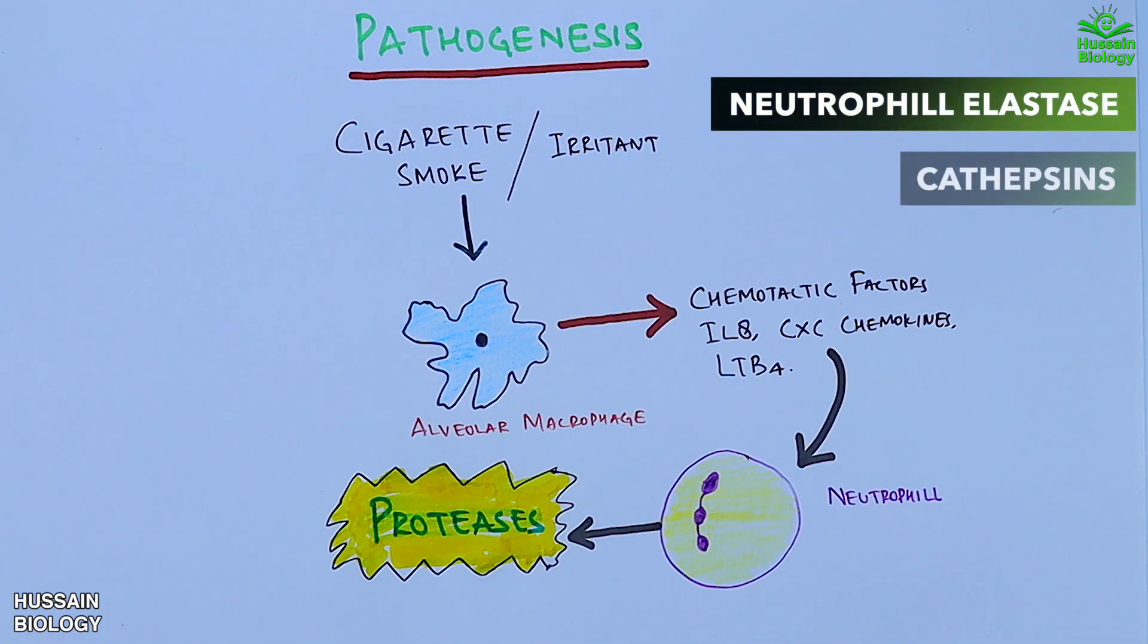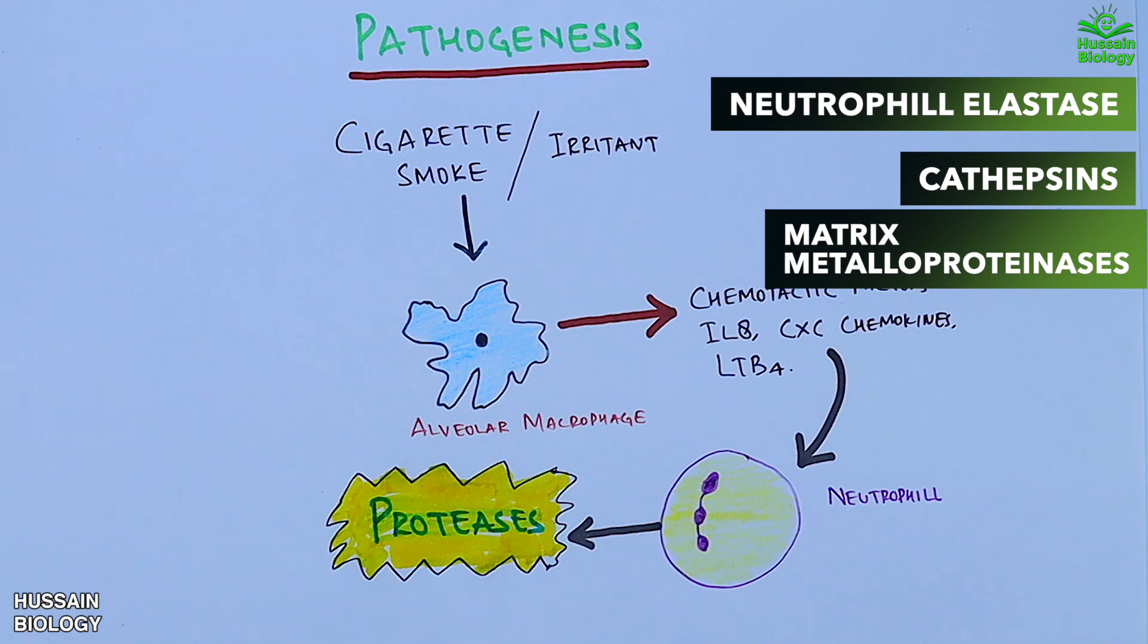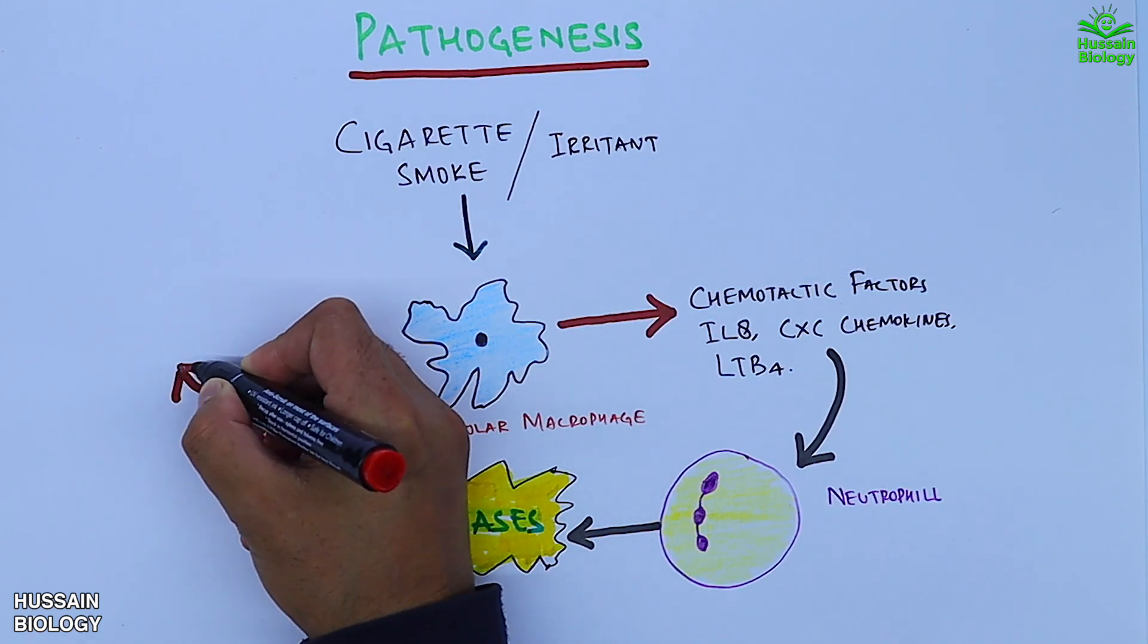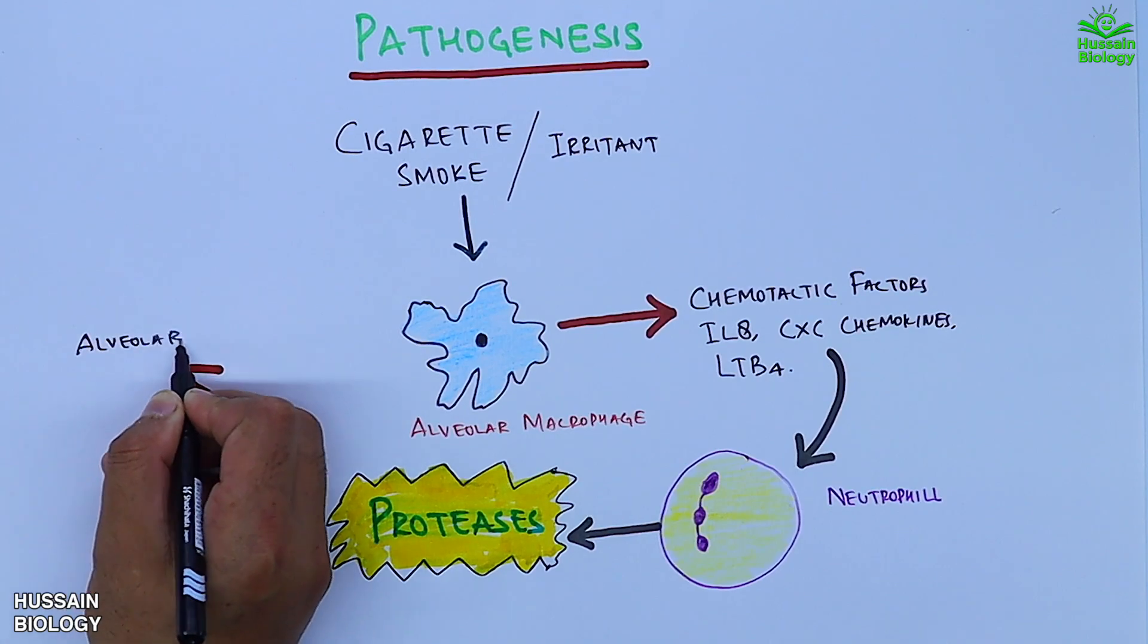These chemotactic factors in turn stimulate the neutrophils to secrete proteases in the form of neutrophil elastase, cathepsins, and matrix metalloproteinases. These proteases or elastases target the alveolar wall and we get alveolar wall destruction.